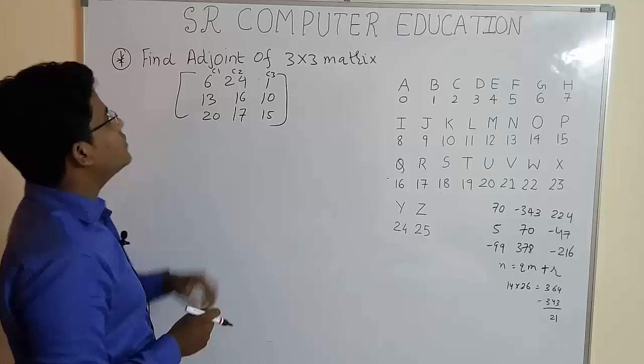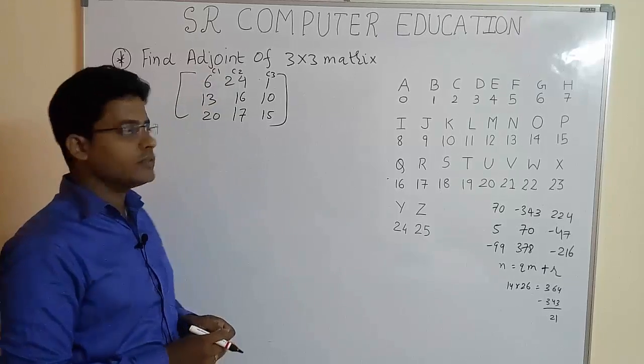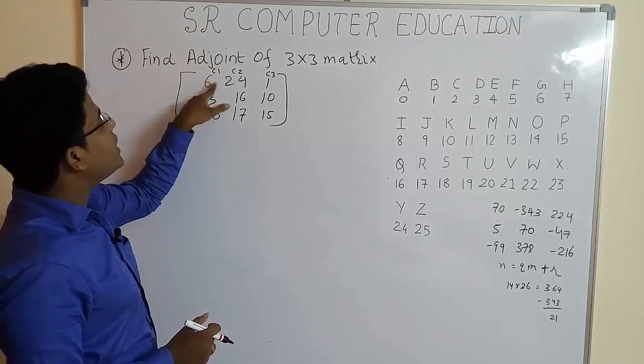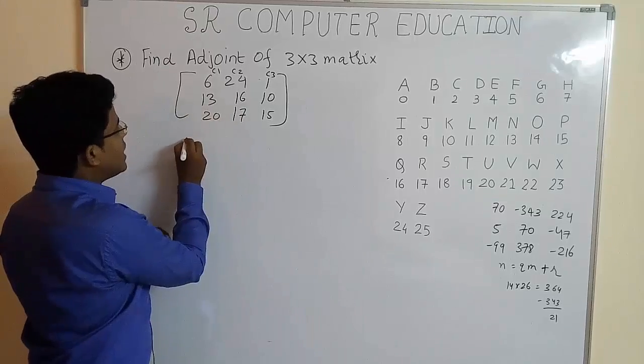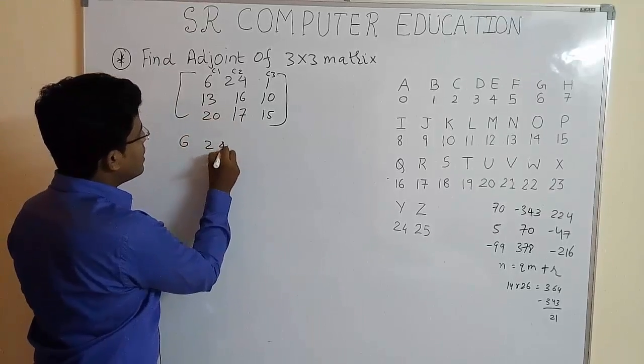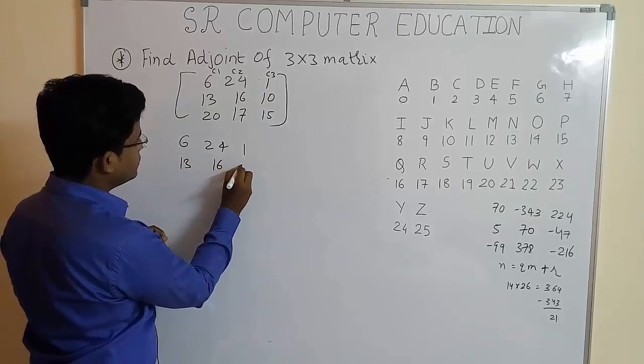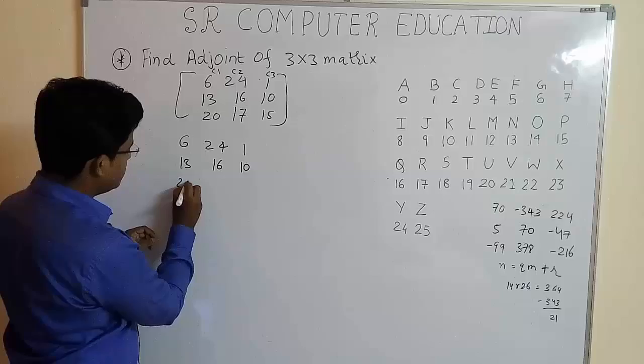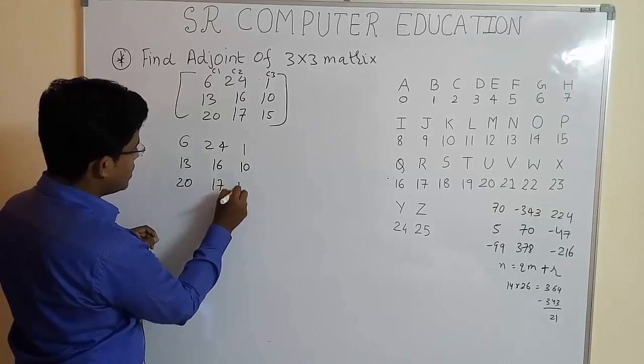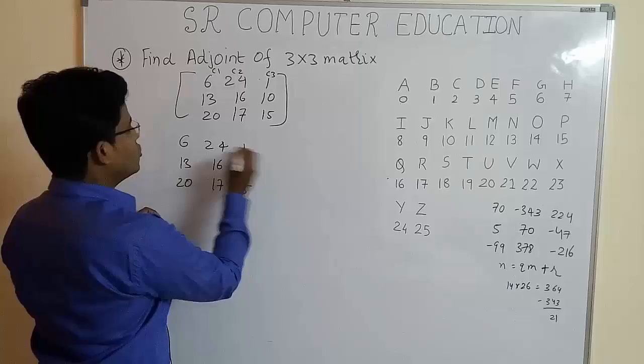Now in this shortcut method for finding the adjoint of the matrix, you have to repeat column 1 and column 2. First, you write the original matrices.